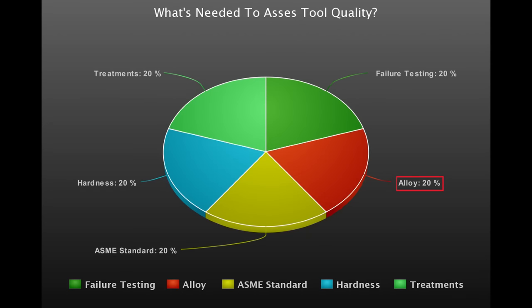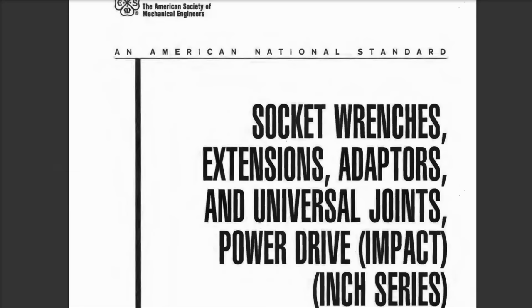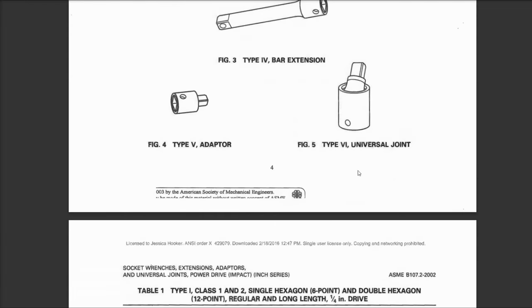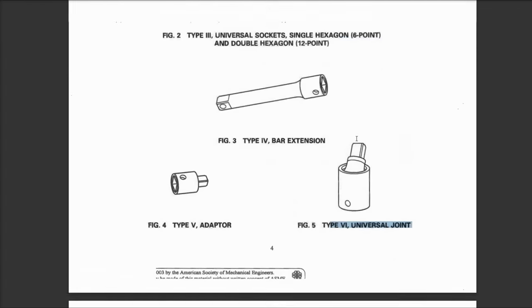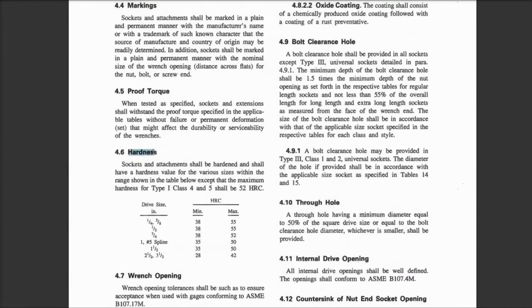Next in the pie is the ASME standard that applies to your tool, which for us is B107.2, written for extensions in universal joints used with an impact, specifically section 4.6, showing what we're working with here. It states for a half inch drive, the range of hardness should be thirty eight to fifty five Rockwell C, which is the measurement we're going to be taking.